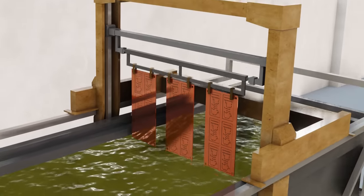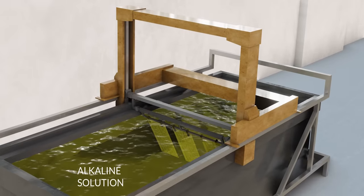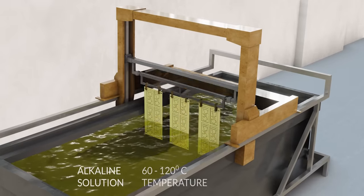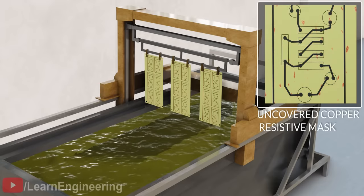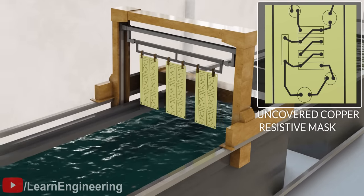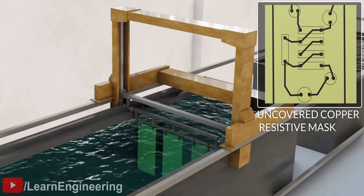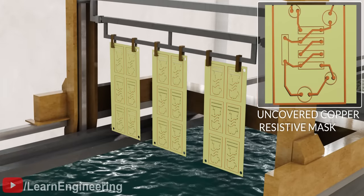Now, if you dip this arrangement into an alkaline solution at 60 to 120 degrees Celsius, the area of copper uncovered by the resistive mask dissolves, or is etched away. After this process is complete, the protective mask is washed off as well. Thus, we are left with only required traces of copper.